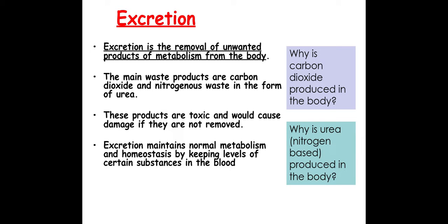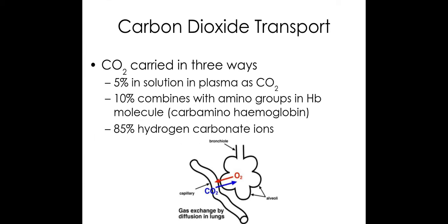Carbon dioxide is produced from aerobic respiration, and urea is produced from the process of deamination of excess amino acids in the body. This part is a little recap on transporting animals, where we need to know about how carbon dioxide is transported in the body. We should already know that approximately 5% of carbon dioxide is dissolved straight into the blood plasma and carried around the blood.